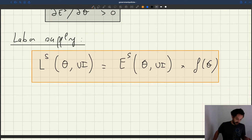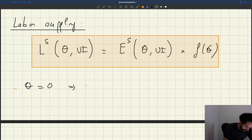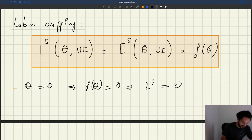So what are the key properties of the labor supply, compared to what we had before? Well, once again, we know that when theta is equal to zero, f of theta is equal to zero, so the labor supply is equal to zero, so that's a useful result.